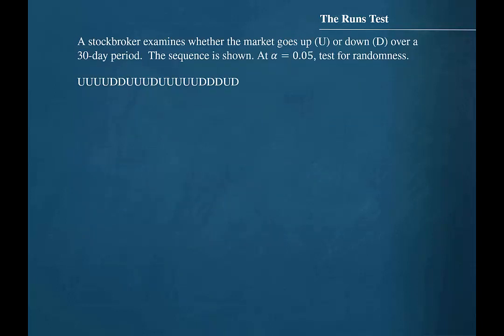A stockbroker examines whether the market goes up, U, or down, D, over a 30-day period. The sequence is shown. At alpha equal to 0.05, test for randomness.